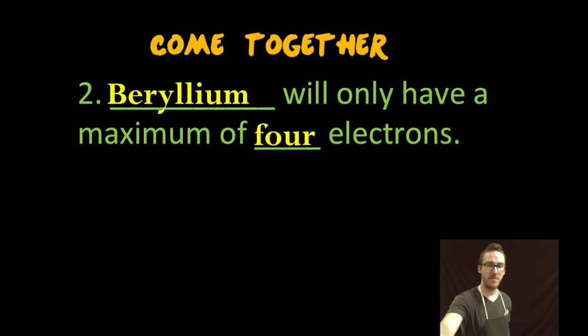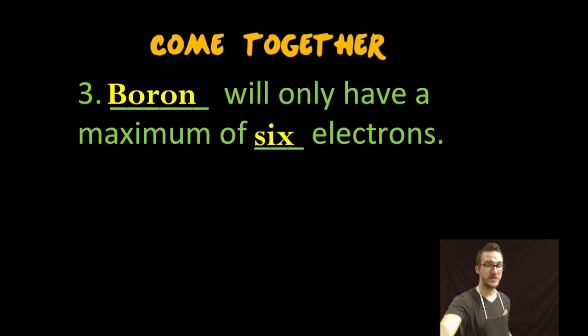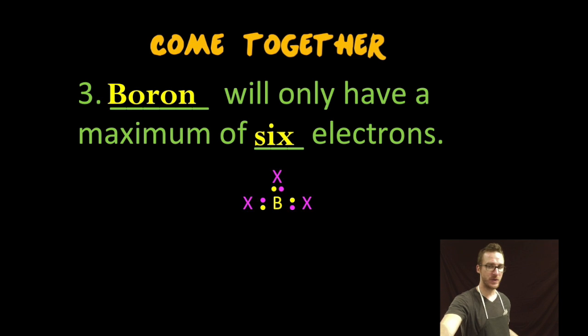Beryllium will only have a maximum of four electrons. Again think about its Lewis valence electron dot structure for the individual neutral atom. It can only share those two electrons to give a maximum of four total if shared with two atoms each. Boron can have a maximum of six electrons. Coming back to the original neutral Lewis valence electron dot structure, bond it with three randos, maximum six.